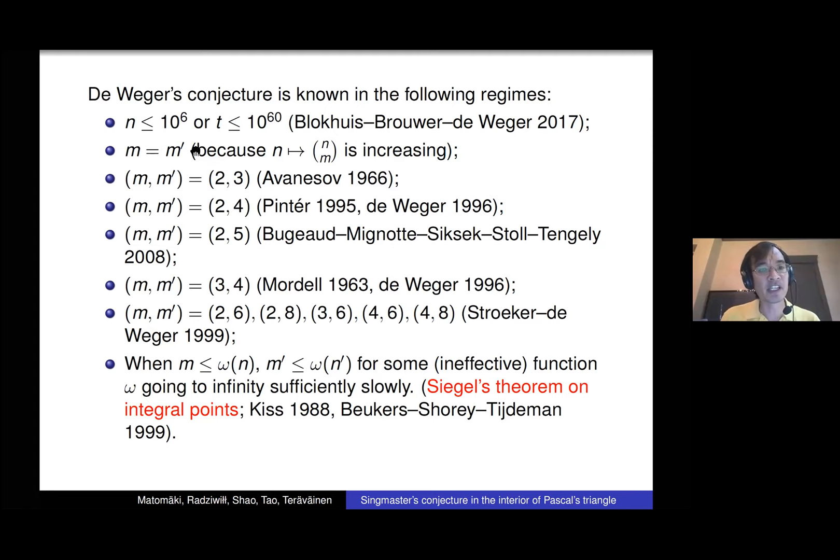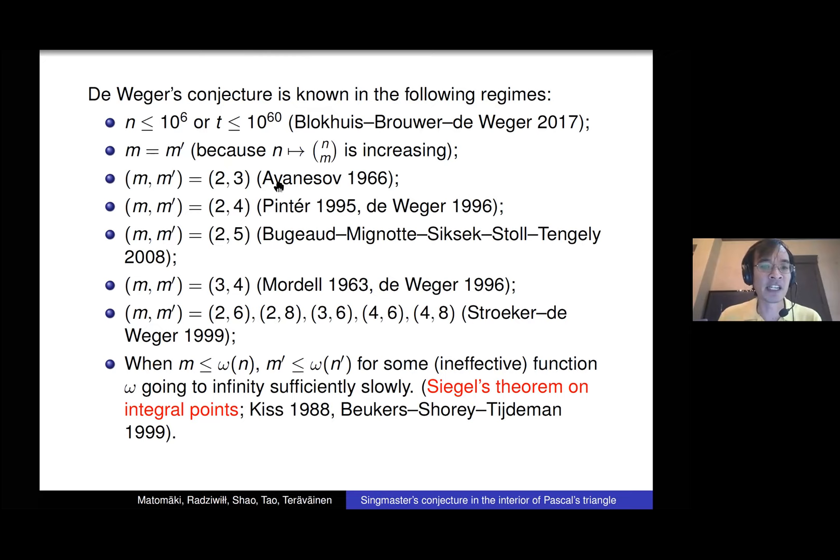There are no collisions n choose m equals n choose m' if m and m' are the same — that's easy because for fixed m, n choose m is an increasing function of n. For small n and m, the equation n choose m equals n' choose m' for fixed m and m' is just a fixed Diophantine equation.